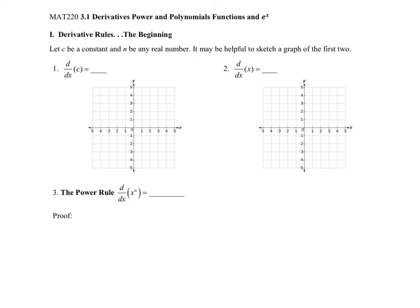We are starting a new chapter and a new section all about derivatives. We began studying derivatives at the end of last chapter and found that a derivative is the instantaneous rate of change, which is the slope of the tangent line on a curve at any point. In this section we are going to begin developing some rules or shortcuts so that we don't have to do the long limit process every time we want to calculate a derivative.